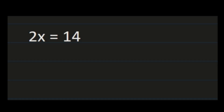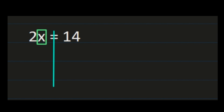For our first example, we have 2x, or 2 times x, equals 14. Just like we did with addition and subtraction, we want to isolate our variable x, making sure we do the same thing on the left as on the right. Putting a box around the x may help, and I highly suggest drawing a line down the center of your problem while you're still learning, so that what you do on the left, you always do on the right. To isolate x, we need to do the inverse operation.